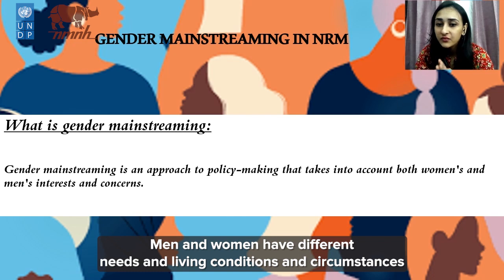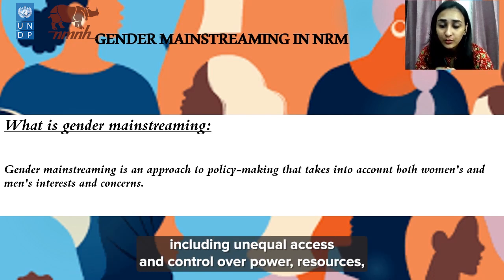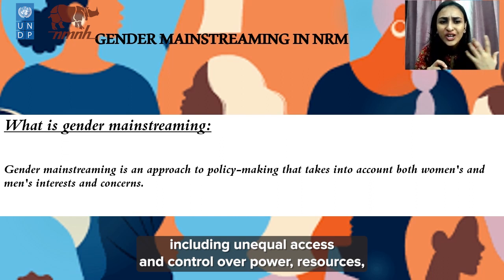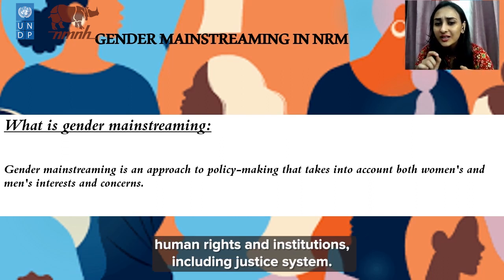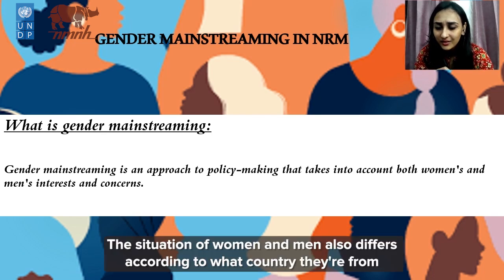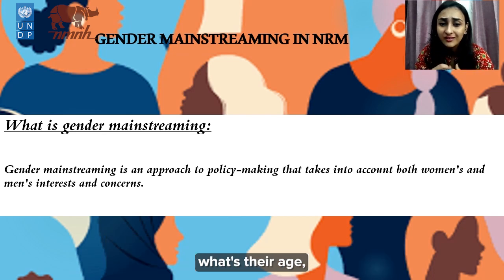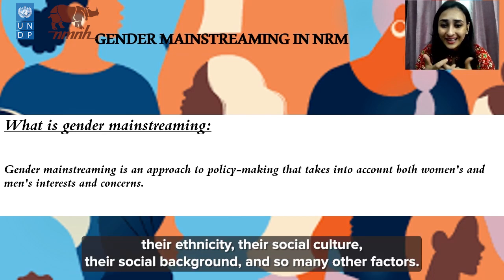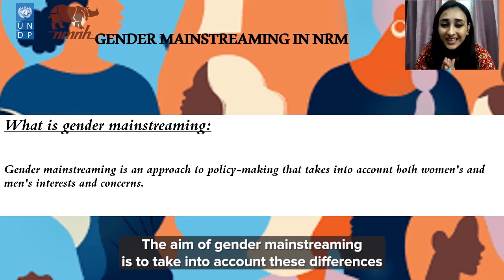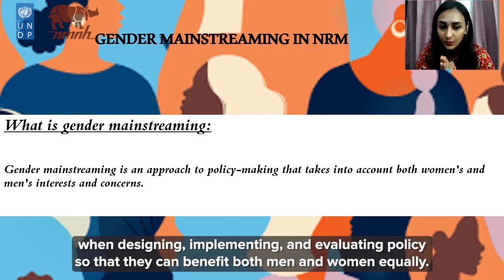Men and women have different needs, living conditions, and circumstances, including unequal access and control over power, resources, human rights, and institutions including the justice system. The situation of women and men also differs according to country, age, ethnicity, social background, and many other factors. The aim of gender mainstreaming is to take into account these differences when designing, implementing, and evaluating policy so that it can benefit both men and women equally.